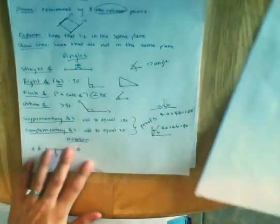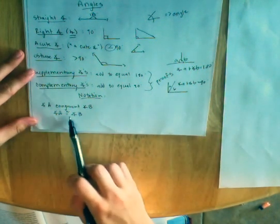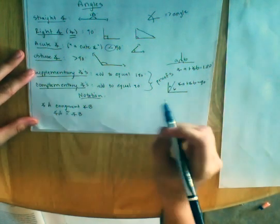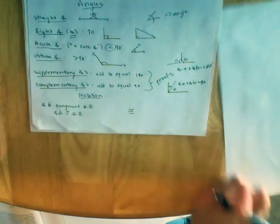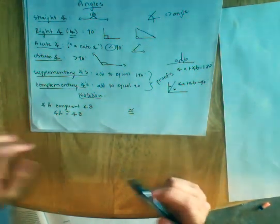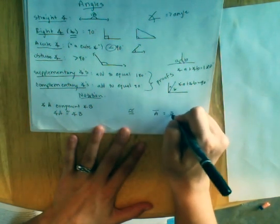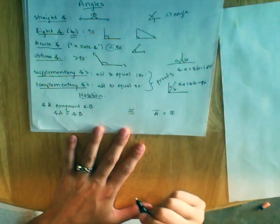We have particular notation that we use. Angle A is congruent to angle B. We write it as this with the two-line squiggle on top. That means congruent. Typically when we talk about line segments, we'll say segment A equals segment B.